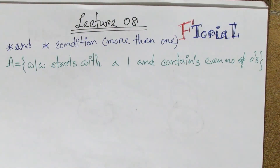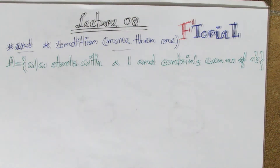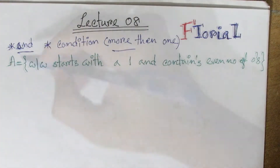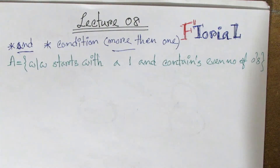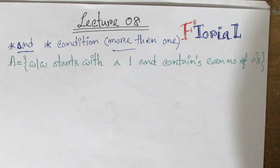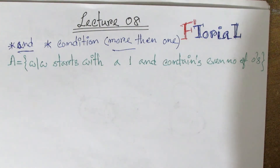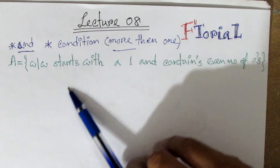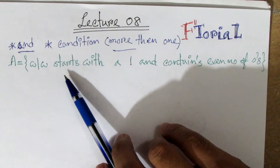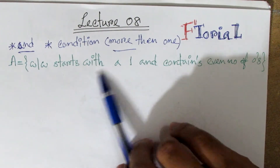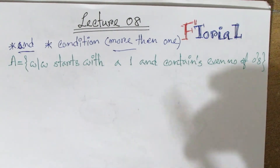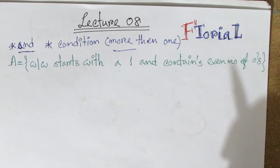Today I will show you the example of DFA. The first condition is: start with a 1 and contains an even number of zeros.